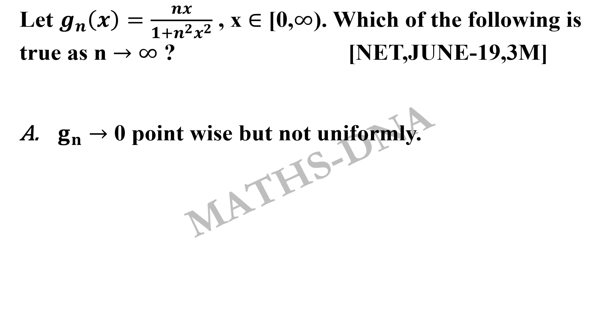The options are: (a) g_n tends to 0 pointwise but not uniformly, (b) g_n tends to 0 uniformly,